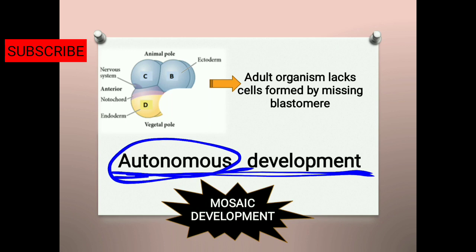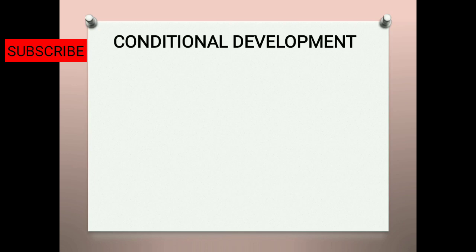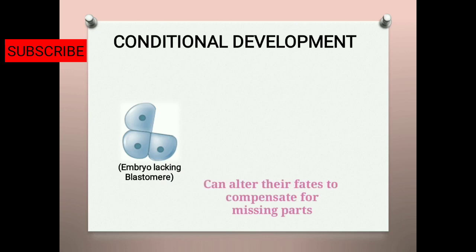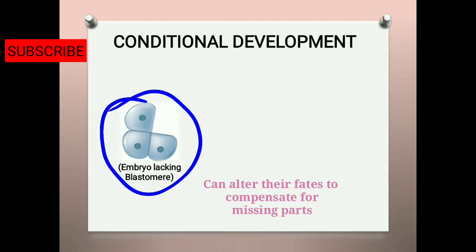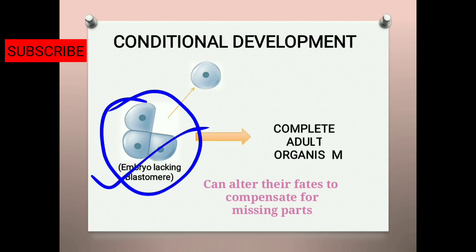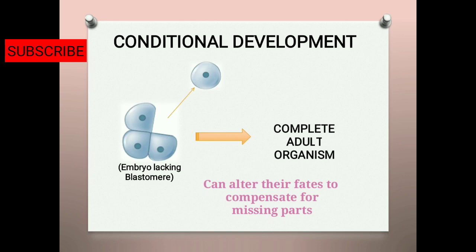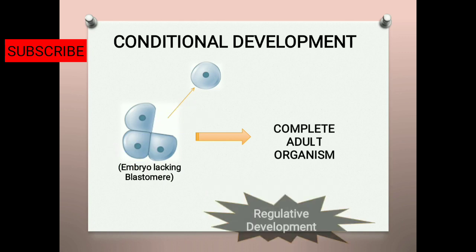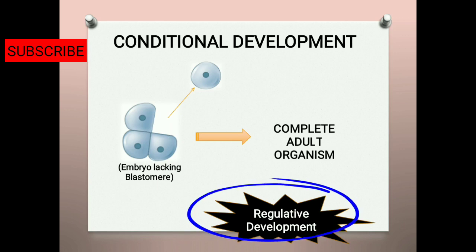In regulative development, embryonic cells have a tendency to alter their own fate. They can compensate for lost cells — if some cells are removed from the embryo, the remaining cells can alter their fate and compensate for that loss, performing the function of the missing embryonic cells. This is regulatory development, which corresponds to conditional specification.